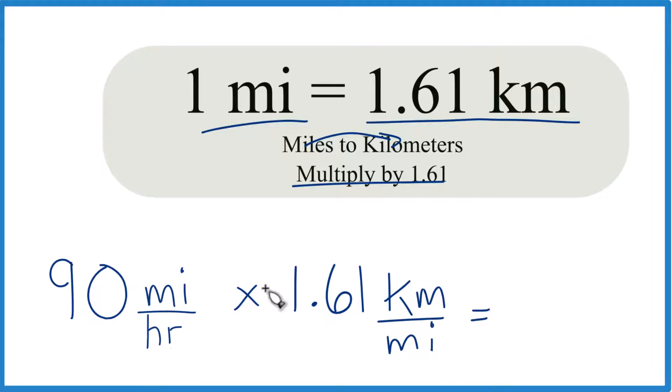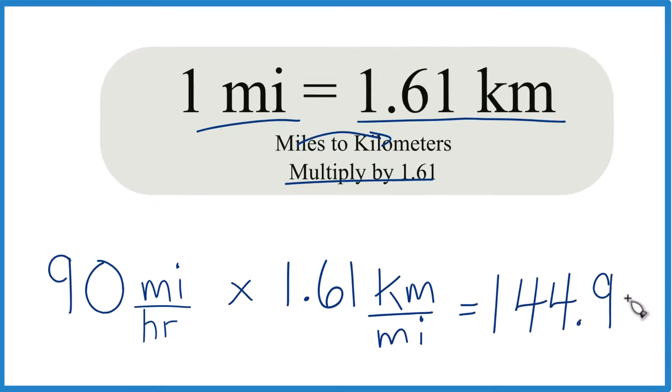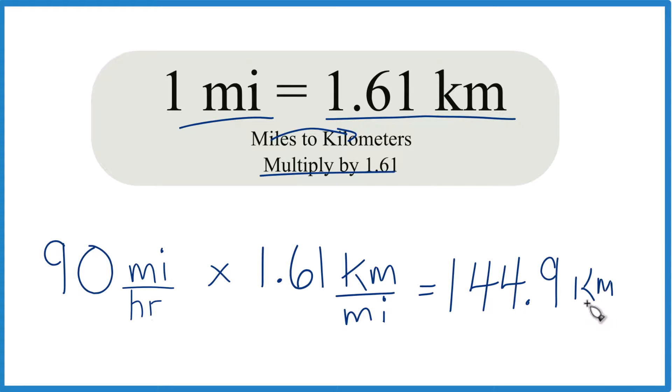So we multiply 90 times 1.61, and we get 144.9, and that's going to be kilometers per hour. Or, because we have miles on top and the bottom, they cancel out, and we're left with kilometers per hour.